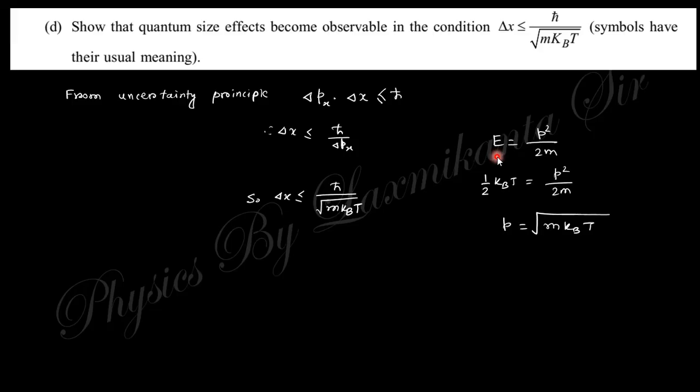Energy in every degree of freedom is half kвT. So if you compare, you will get p is √(mkвT). Put this value and you will obtain this size, which is actually observable for the quantum effect.